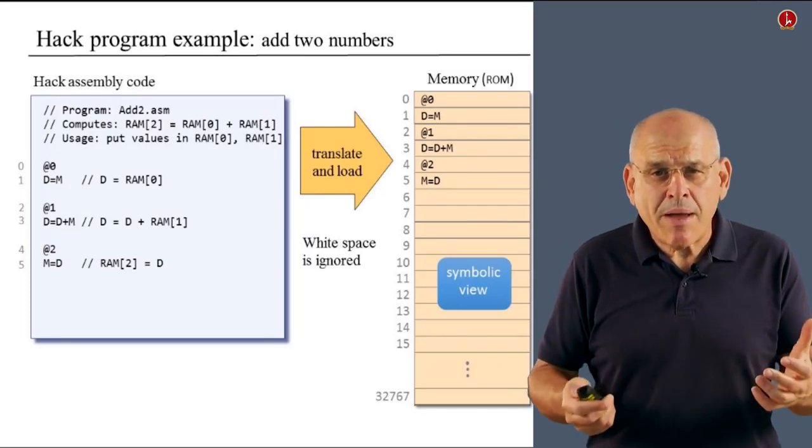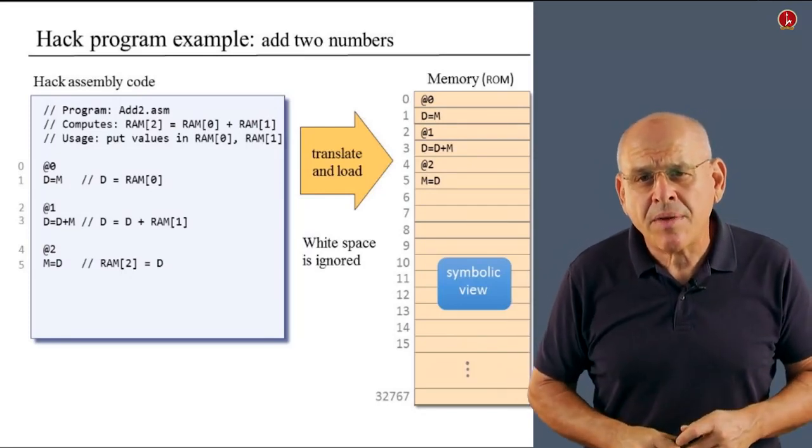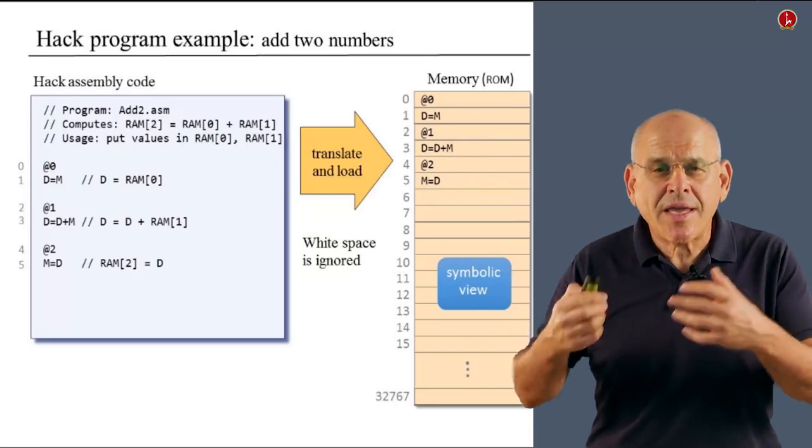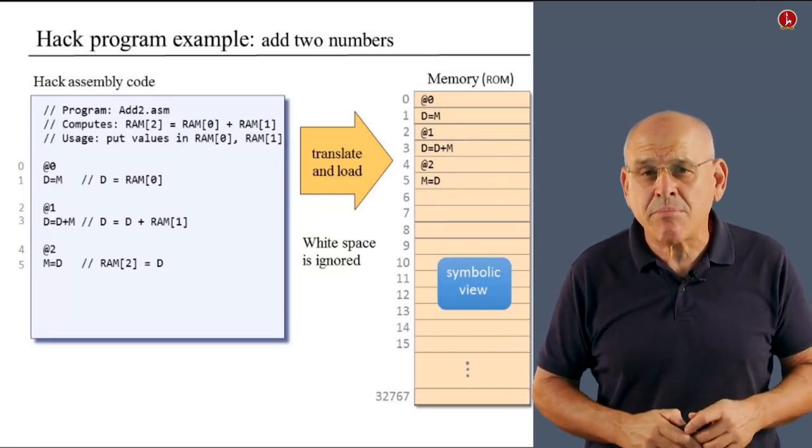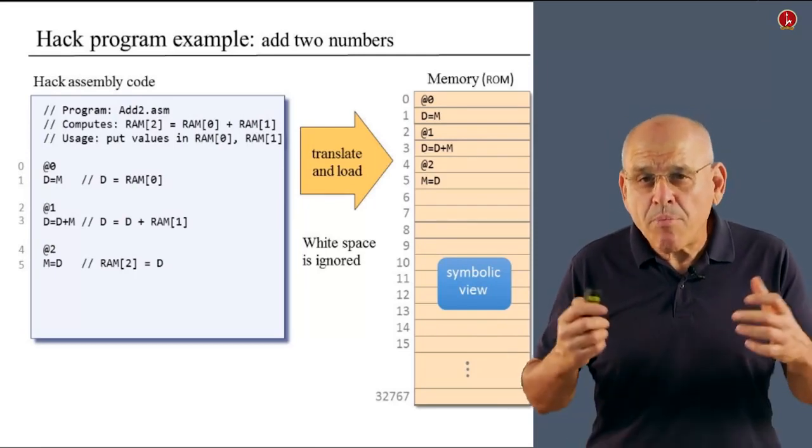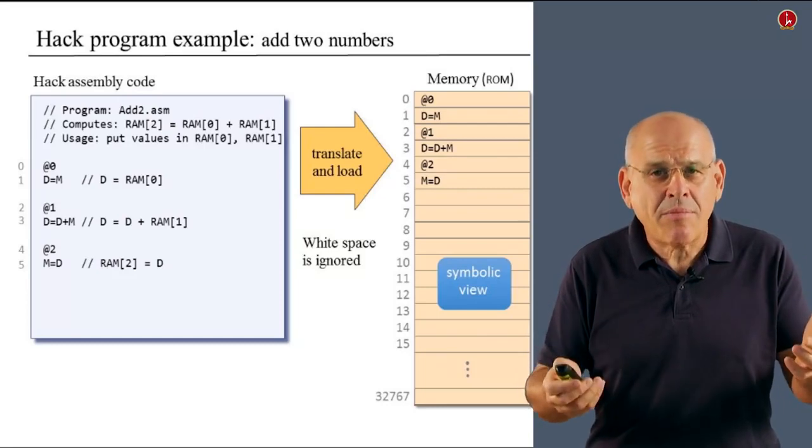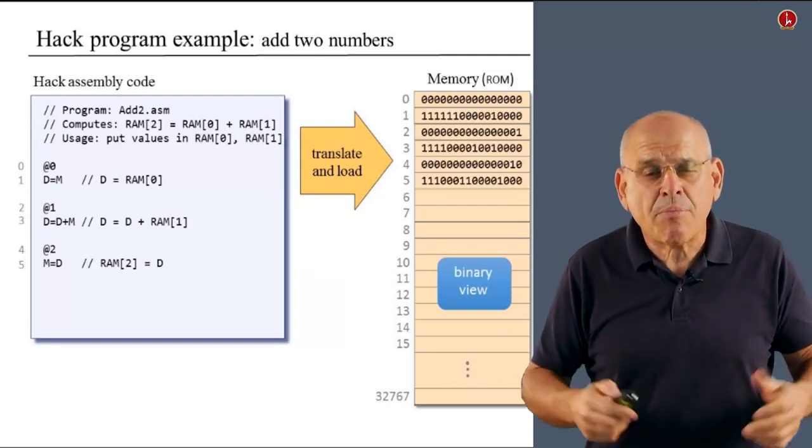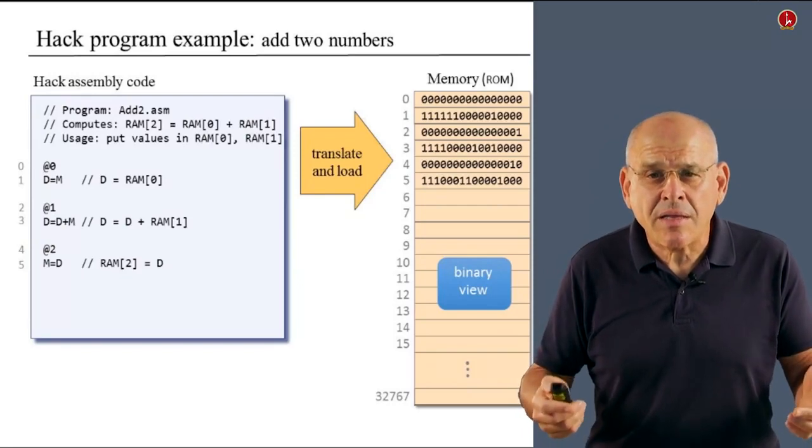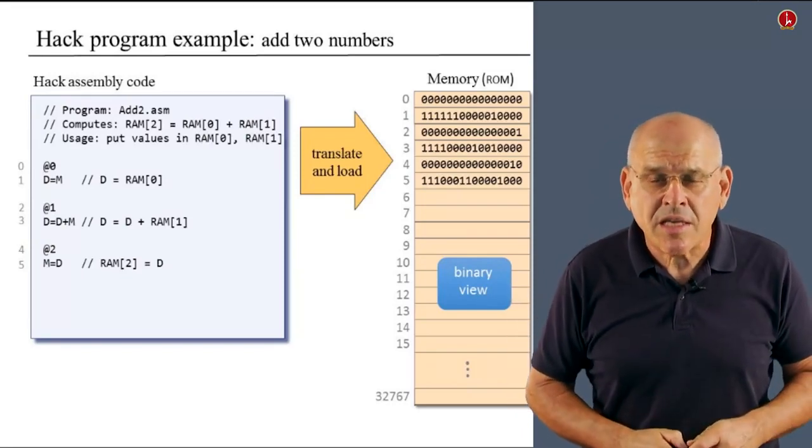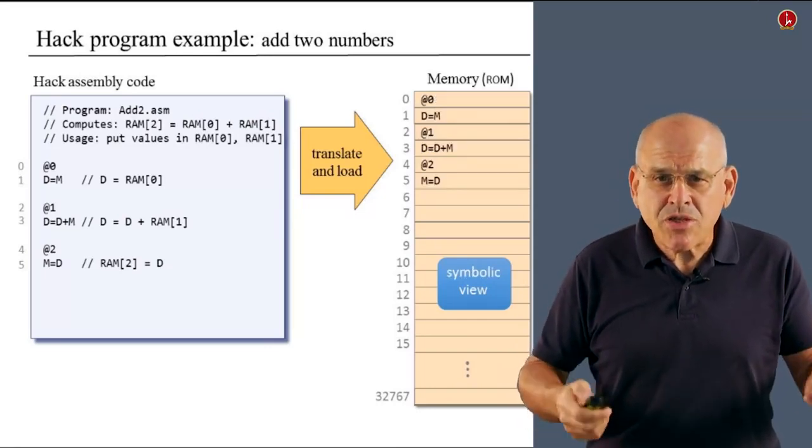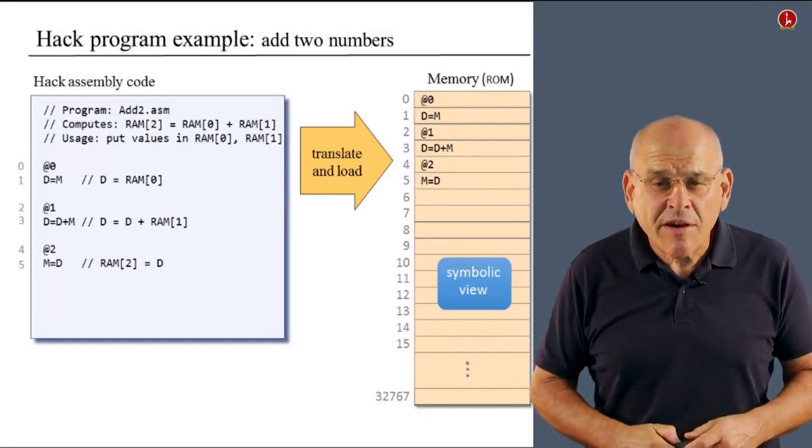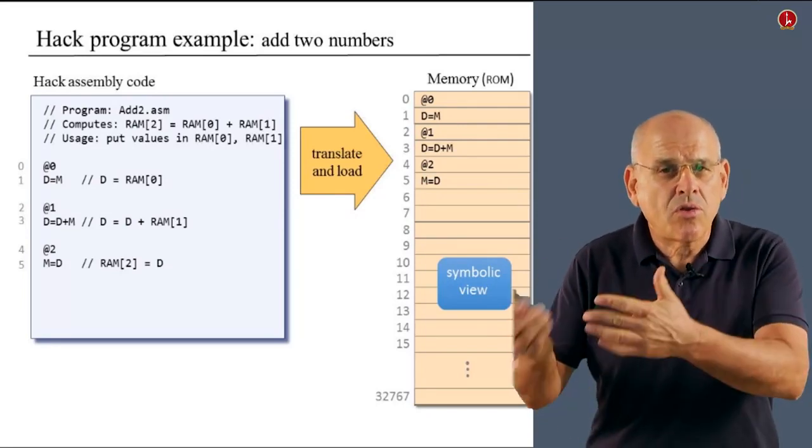And when you translate this program and load it into memory, there are some interesting observations that we have to make. First of all, white space is ignored. And the only instructions that get into play, so to speak, are the real instructions, the instructions that have line numbers in this example here. And in addition, it's important to remember that what we see here in the instruction memory is a symbolic view of this program. This program, as such, cannot execute on the computer because the computer cannot handle symbols other than 0 and 1. But if you played with our CPU emulator, you know that you can tell the emulator to show you the contents of the instruction memory in binary.